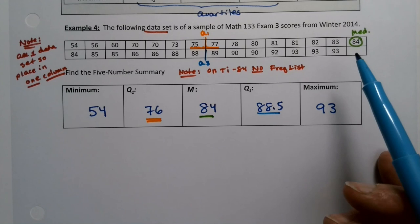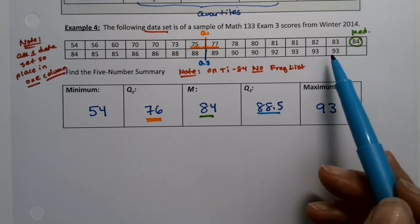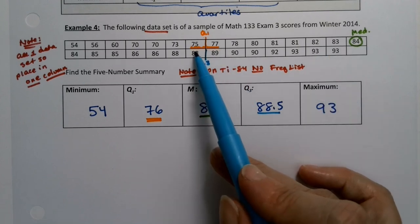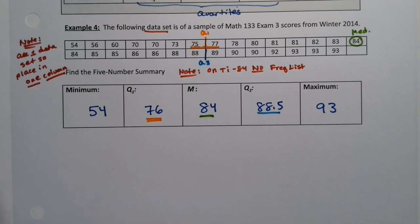Now, how are the computer programs doing it? Well, sometimes the computer programs are including 84 in there. So if you go 84 to 93, then 88 is the median, which is what the StatCrunch is doing. It happens. Different programs will find them slightly differently. That's okay.